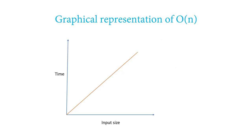In the graphical representation of O(N) as well, you have input size on one axis and time on the other. As you increase the input size, time increases linearly with it. This is called linear time.